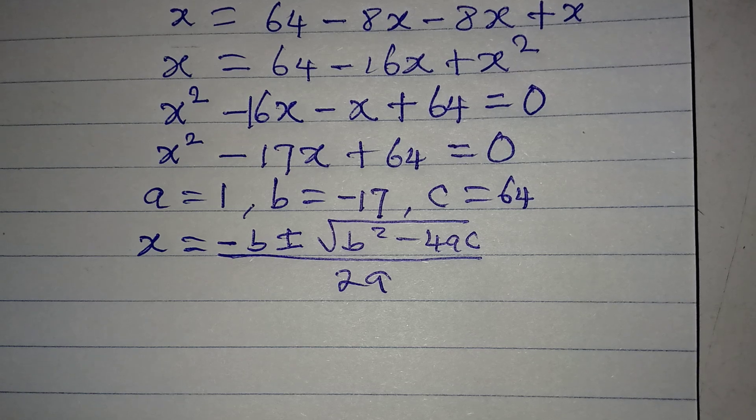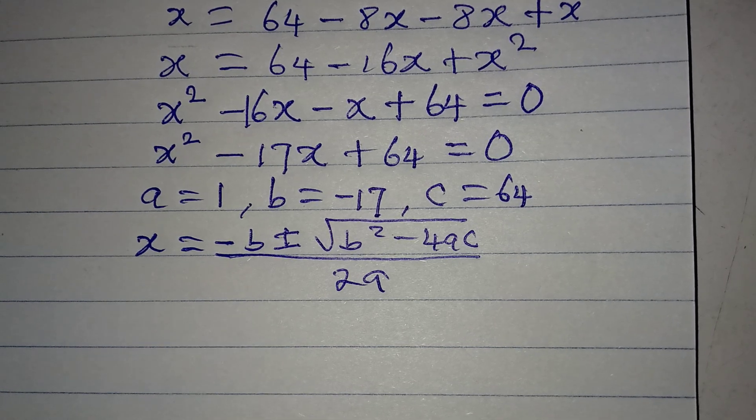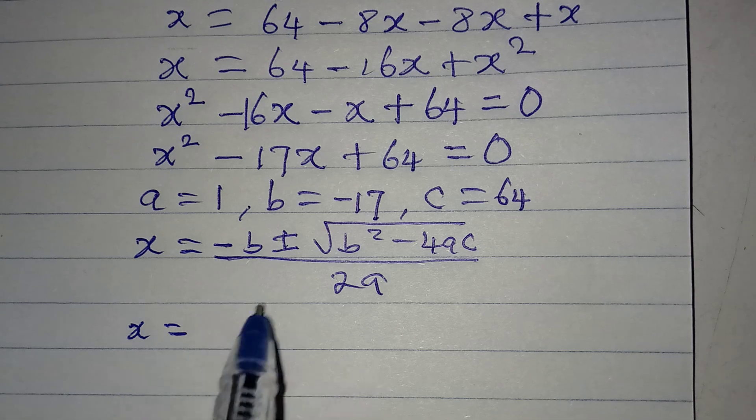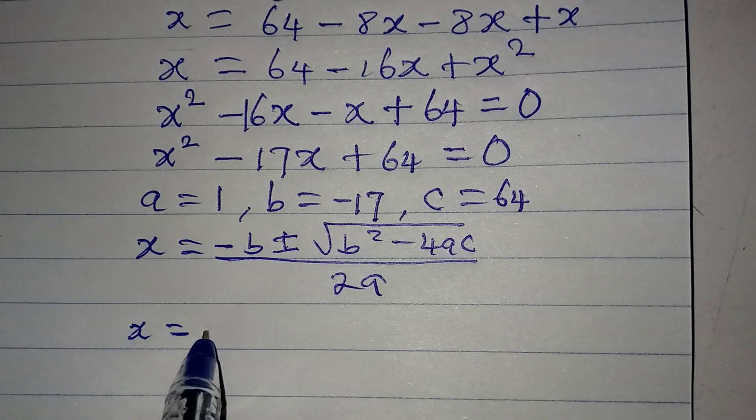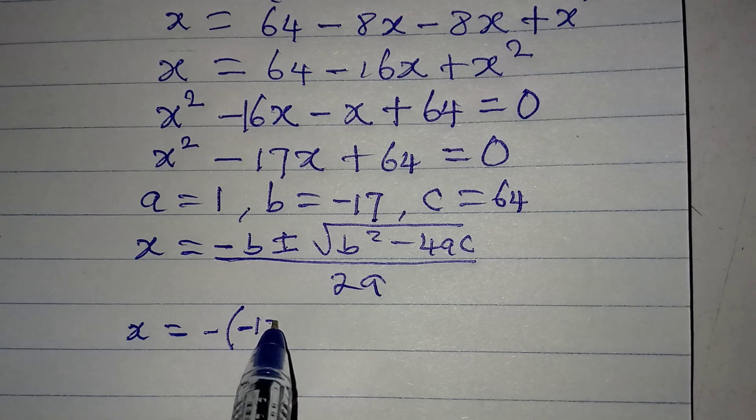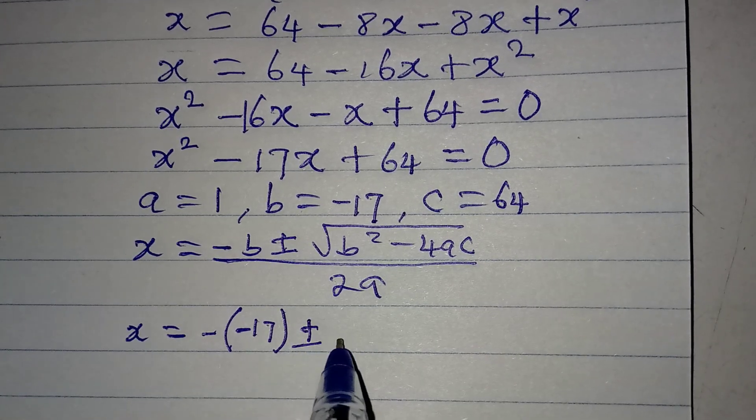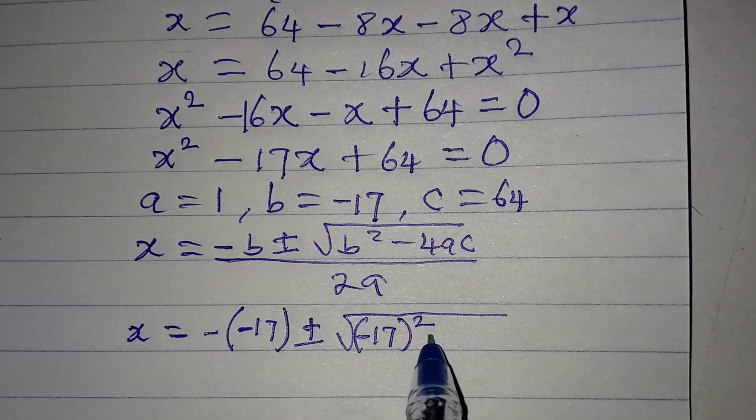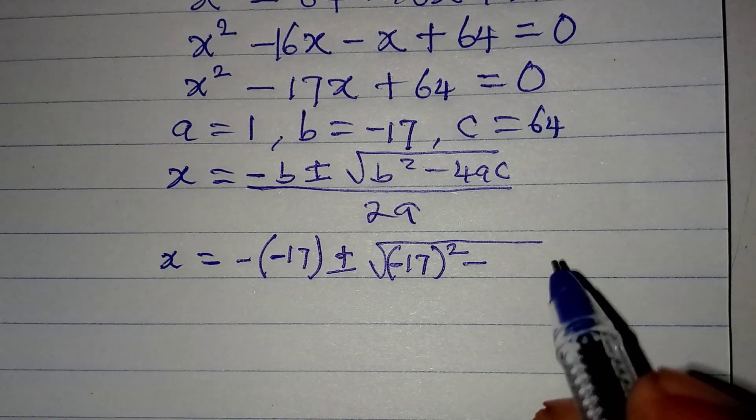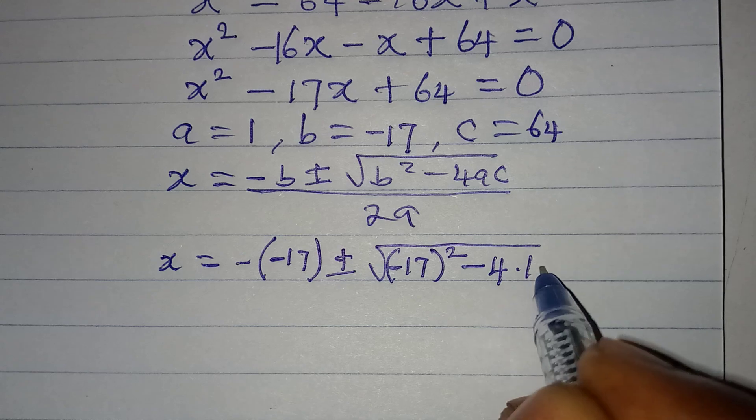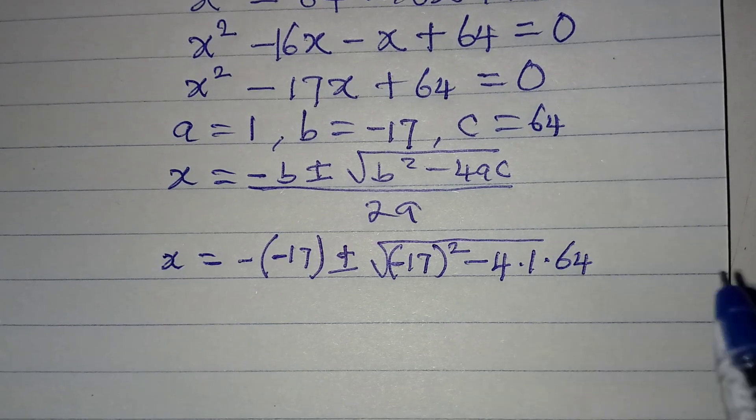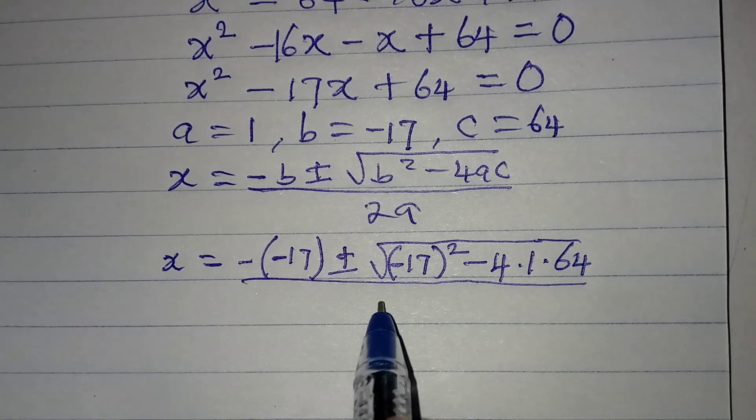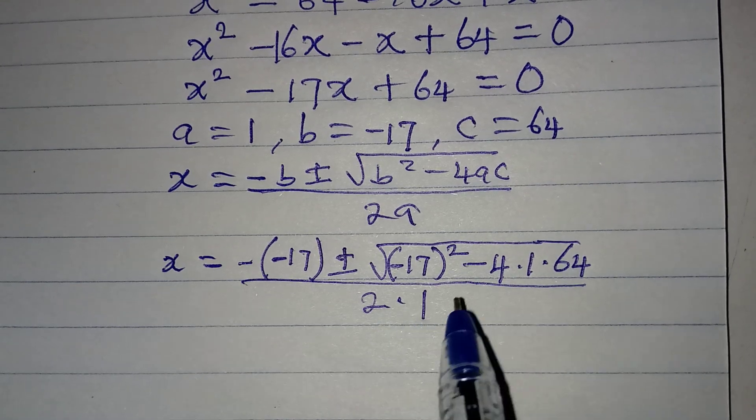Now let's put in the values of a, b, c. So here now, we are going to have x to be equal to, in place of minus b, I'm going to have minus, minus 17, plus or minus, we have minus 17 squared, then minus, we have 4 multiplied by 1 multiplied by c, which is 64. So the whole of this will be over, over 2 times 1, because a is 1.